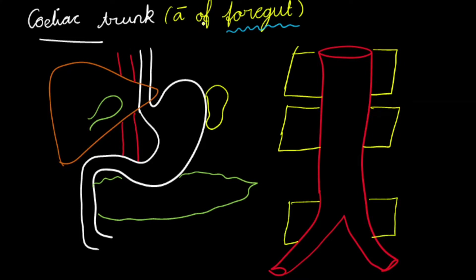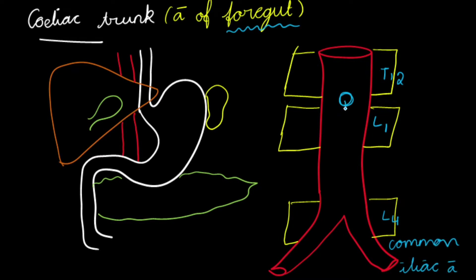The celiac trunk is also called the artery of foregut. It arises from the anterior aspect of the abdominal aorta at the level of T12 and L1. The abdominal aorta bifurcates at L4 as the common iliac artery. The celiac trunk is almost 1.25 centimeters long. It mainly supplies the foregut of the GIT, which includes the stomach.